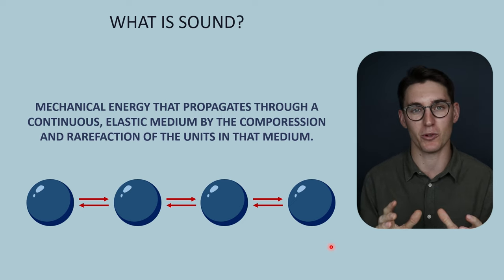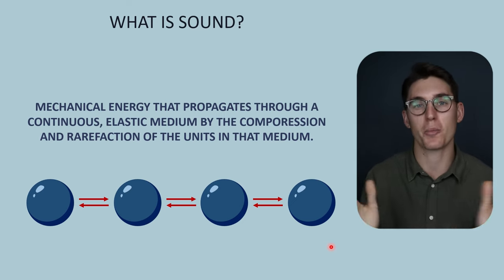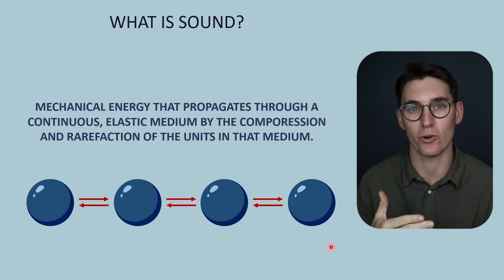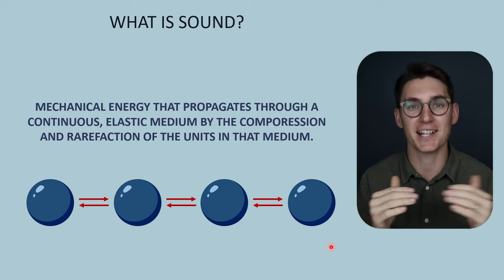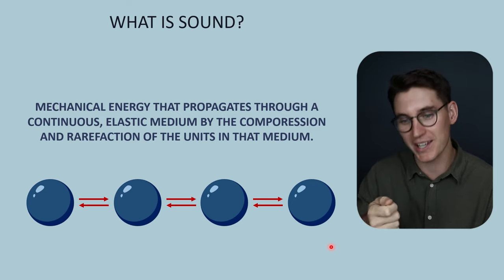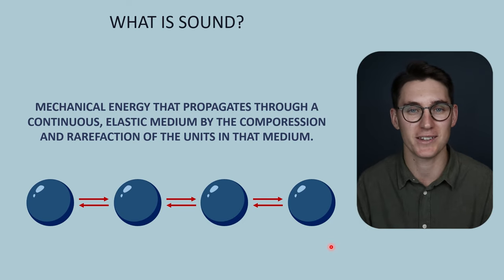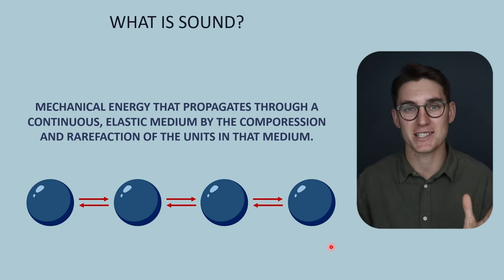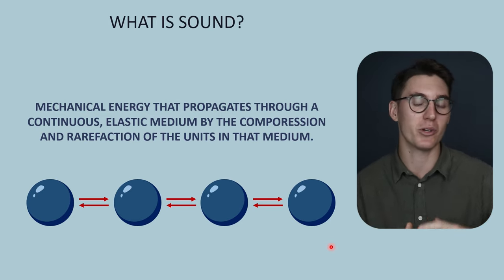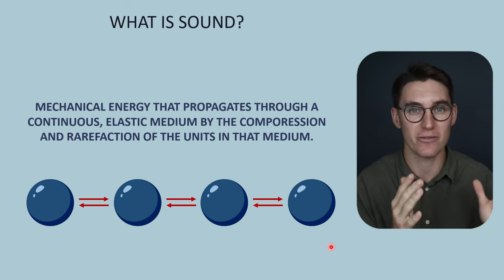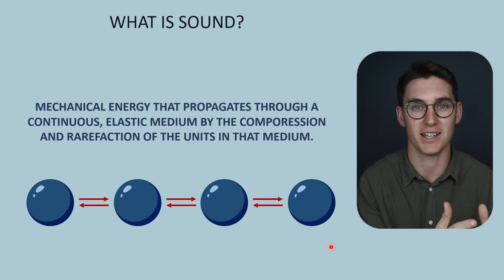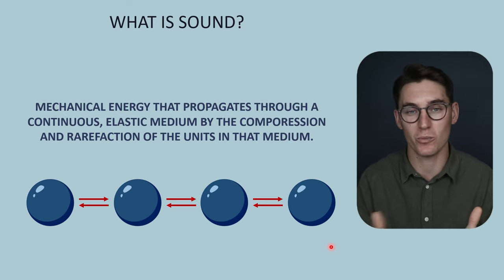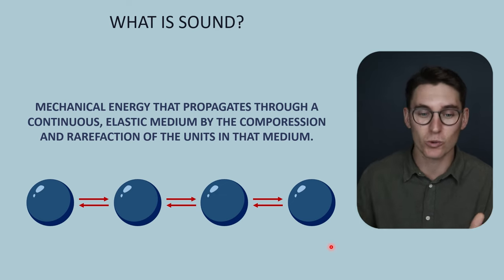Let's break down this definition. It's mechanical energy — it's not self-propagating energy like electromagnetic radiation. It requires a mechanical force. When we create sound we are mechanically moving our voice box; when we create ultrasound waves we are moving an element within the transducer. That energy propagates through a medium that needs to be continuous. Sound needs a medium to propagate. Electromagnetic radiation can travel through a vacuum because it's self-propagating, whereas sound depends on a medium — if that medium is not continuous, the sound will not propagate.